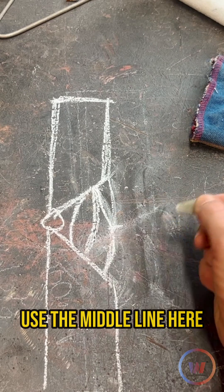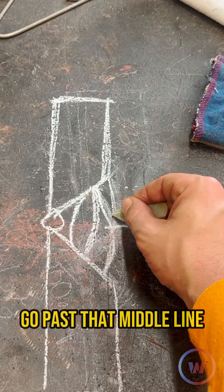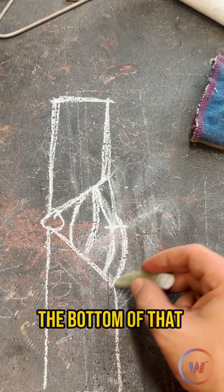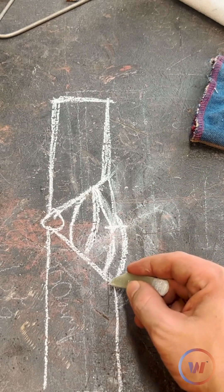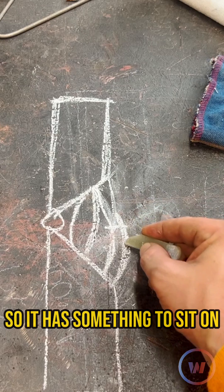Use the middle line here. That first bead needs to go past that middle line, the bottom of that bead needs to land directly on that edge. So it has something to sit on.